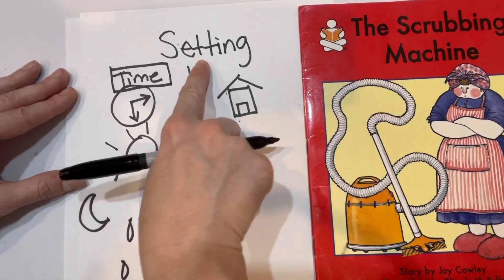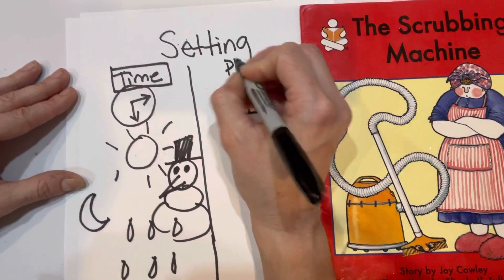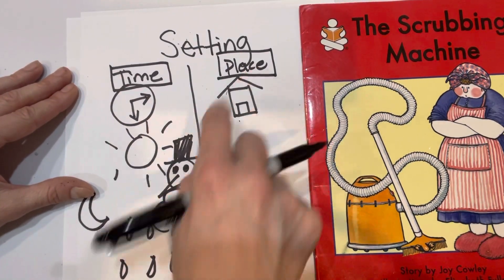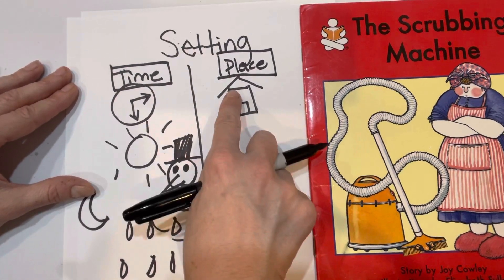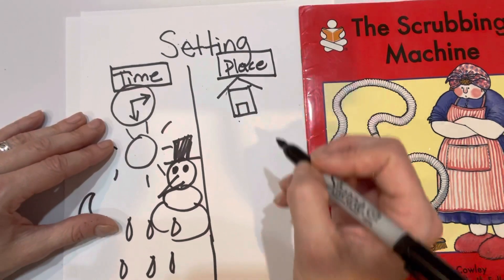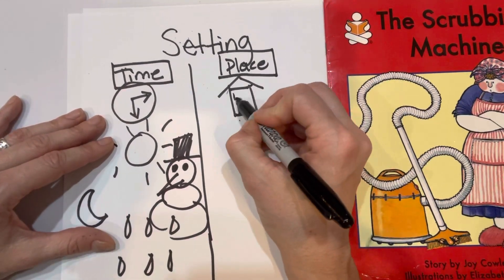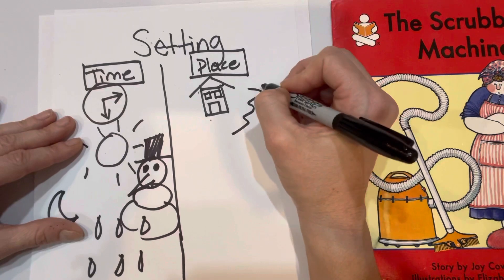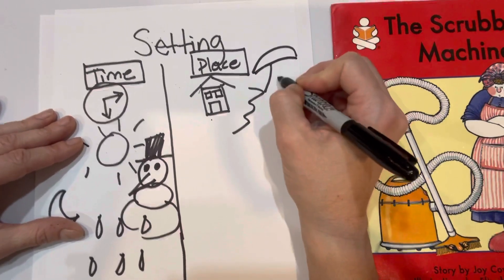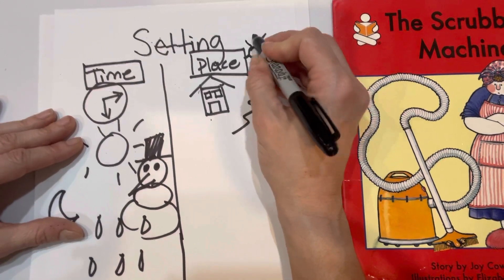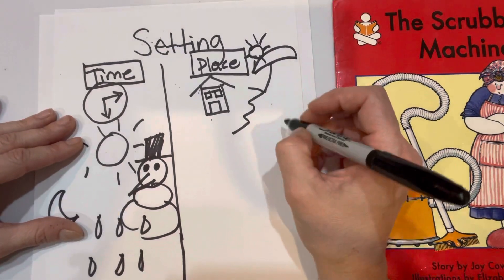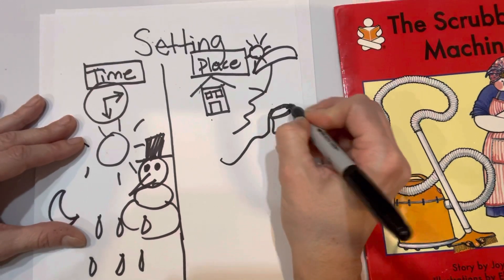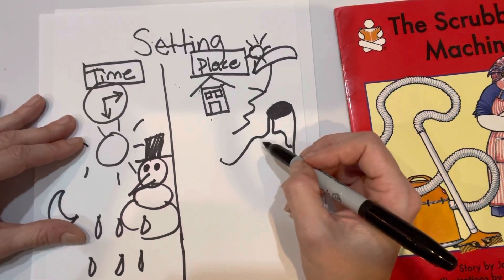The setting is the place — el lugar. Setting significa donde sucedió el cuento. The setting also is where the story happened. Where could be a house. It could be a beach, una playa. Puede ser una montaña o un volcano. It could also be a mountain or a volcano.